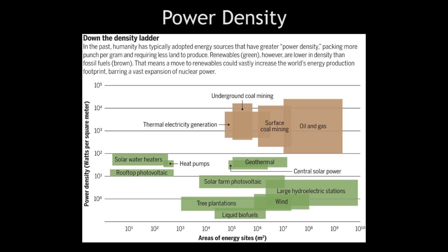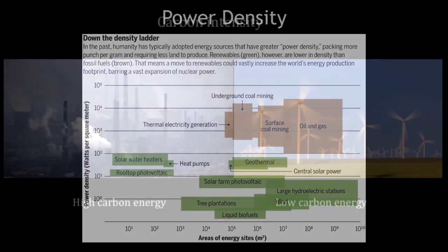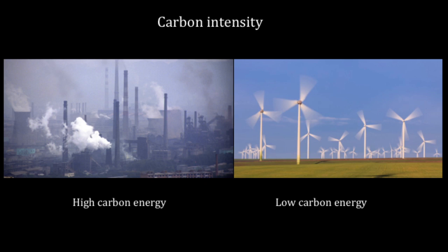In addition to energy density, there's power density, which is how much power capacity there is per unit of land area. Fossil fuels are very power dense — they have small land footprints for the amount of energy they can produce relative to renewables. So, everything else being equal, a large-scale move to renewables will require a lot more land because they have lower power density.